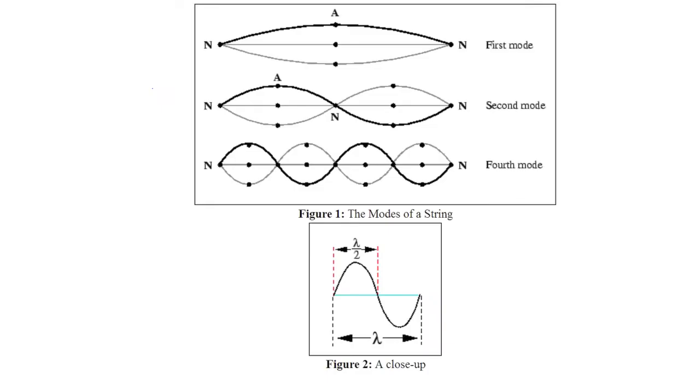In physics, a standing wave, also known as a stationary wave, is a wave that remains in a constant position. It can arise in a stationary medium as a result of interference between two waves traveling in opposite directions.